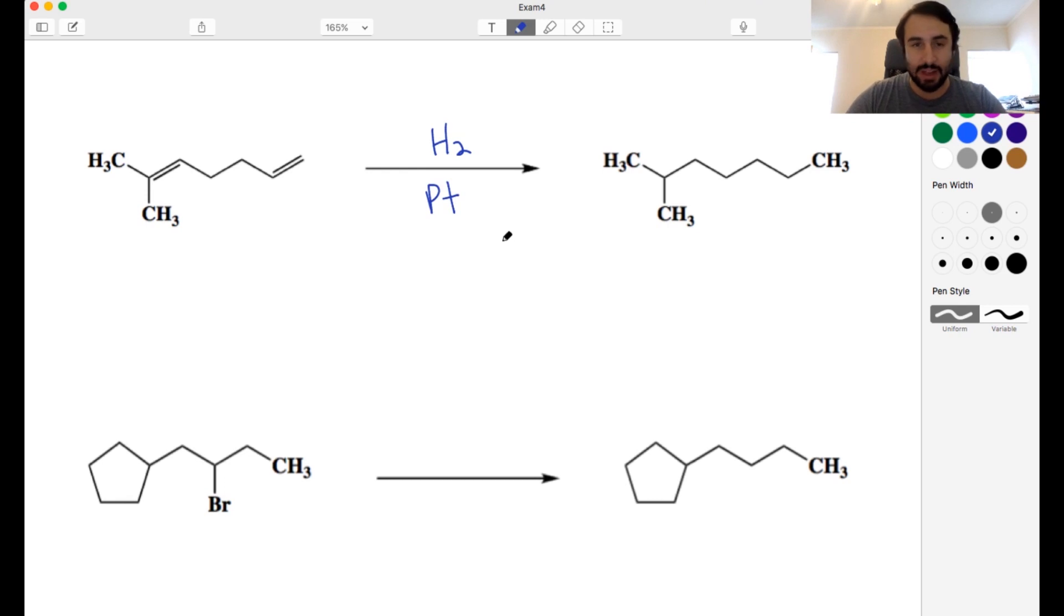We're just going to do hydrogenation over some transition metal catalysts, usually platinum, could be palladium. There's a couple of ways to do this but just whatever our conditions are that you're used to in your class for hydrogenation over some transition metal. So we're just going to get rid of those pi bonds, we're going to add hydrogen atoms to all of those carbons that are participating in the pi bonds. So that one's pretty straightforward.